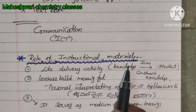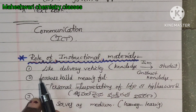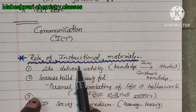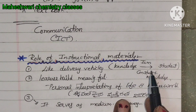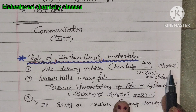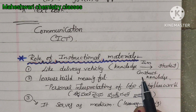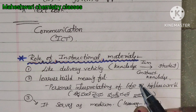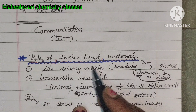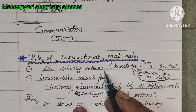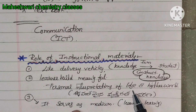Role of instructional materials: How do we do this whole process? First, like delivery vehicles — instructional materials work like delivery vehicles. Knowledge needs to reach the student; we need to be able to use these instructional materials. The instructional materials help build the students' knowledge. This is an important point: constructed knowledge. Instructional materials are utilized like vehicles — delivery vehicles.